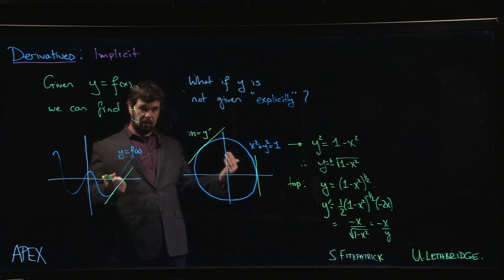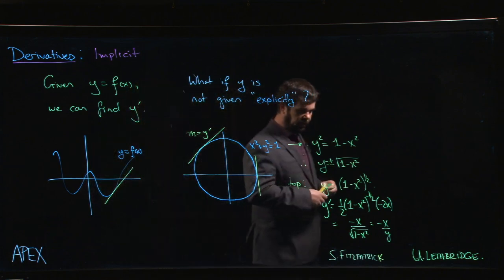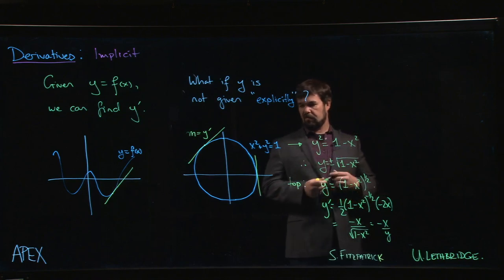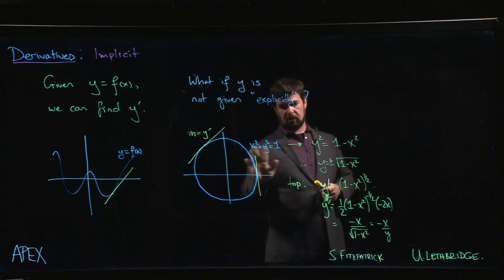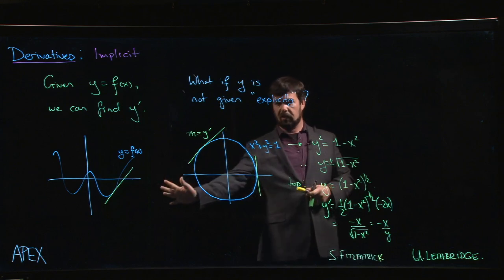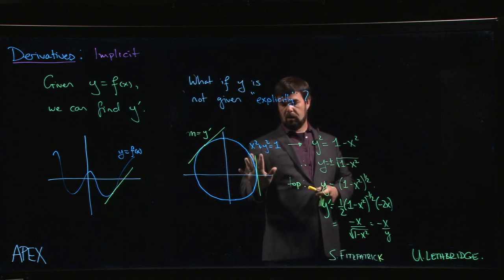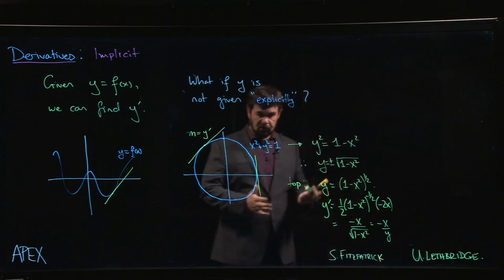So what implicit differentiation does is it makes an assumption. It says you've got some equation like this—so now we've got not necessarily a function but a relation. We've got an equation that's relating the variables x and y. The assumption that you're going to make is that there is some function that is defined by that relation.